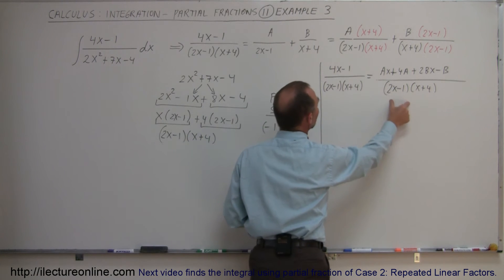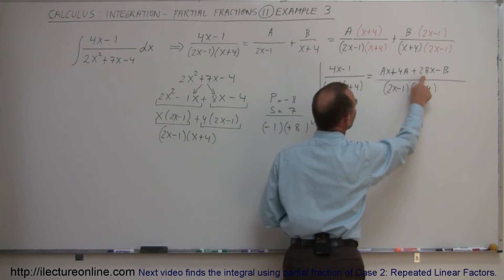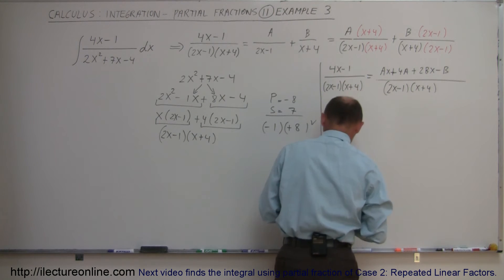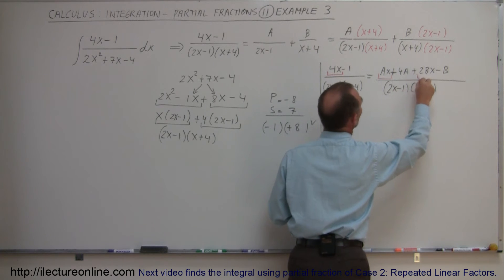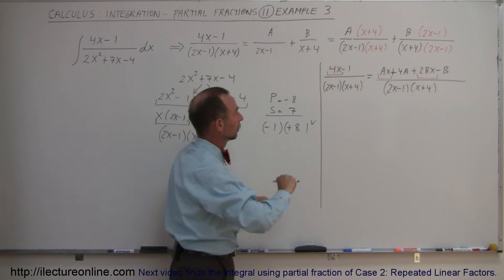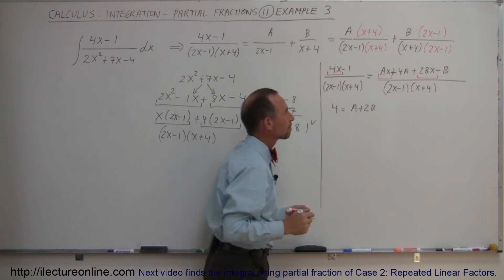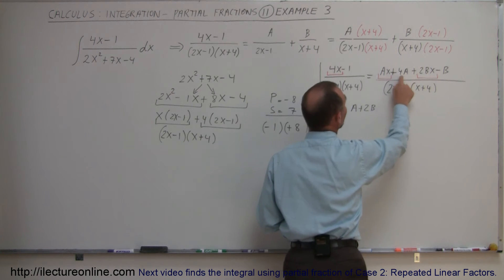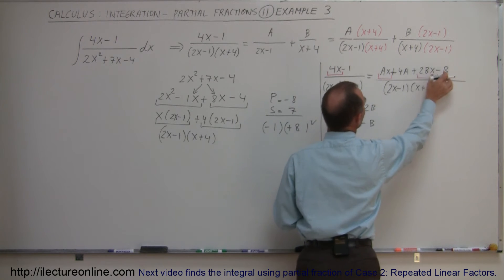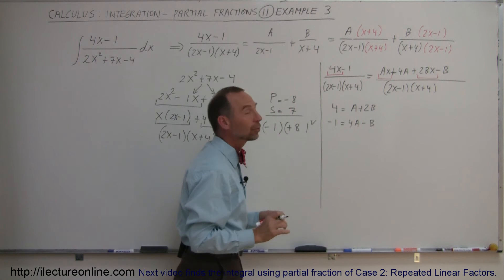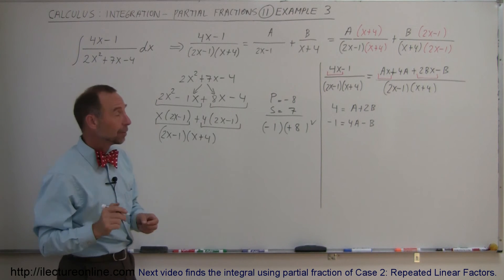The denominators are the same, so the numerators must be equal. On the left I have 4x - 1, and on the right I have ax + 2bx + 4a - b. Matching the x-coefficients gives 4 = a + 2b. Matching the constant terms gives -1 = 4a - b. So I now have two equations and two unknowns to solve.